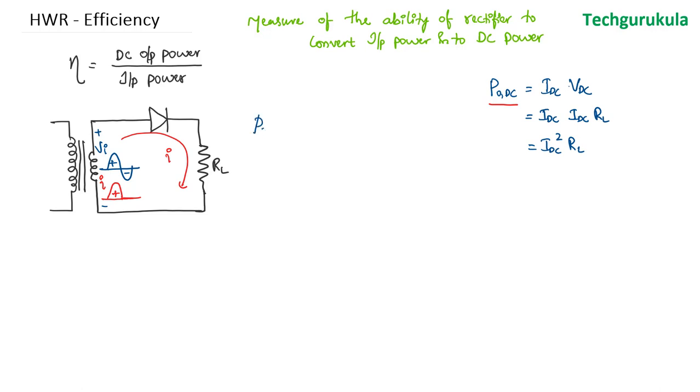To find the input power, we need to first find the instantaneous input power, which is multiplication of instantaneous input voltage times the instantaneous input current. Now to find the input power, we have to take the average over the time period zero to 2π of the instantaneous power.